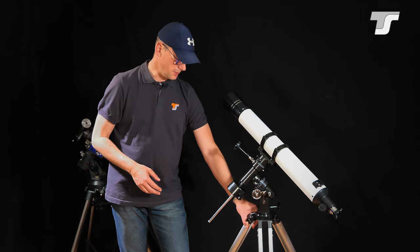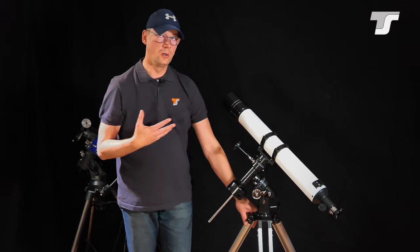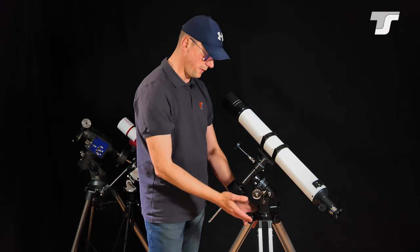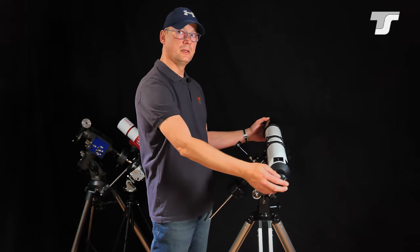So first you have to set up the tripod. This is height adjustable, so depending on your own height, you can adjust the height of the tripod so that you get a convenient position of the telescope itself.